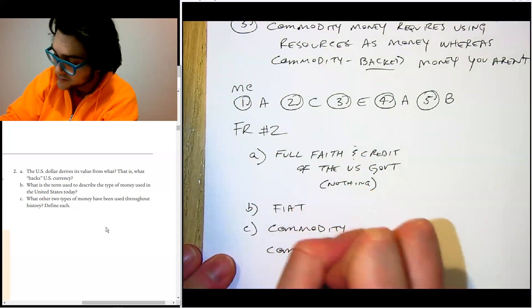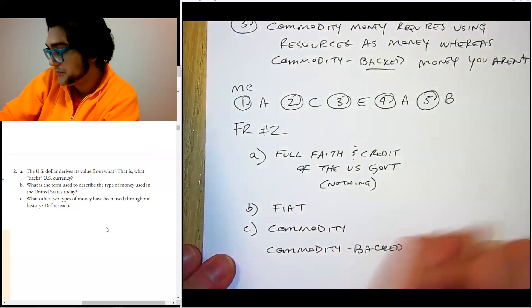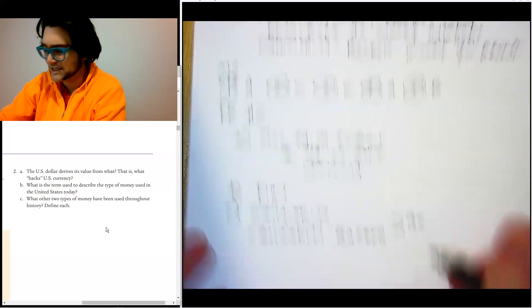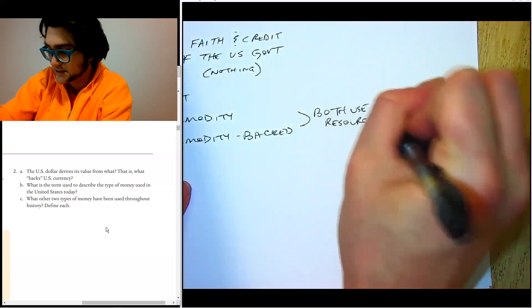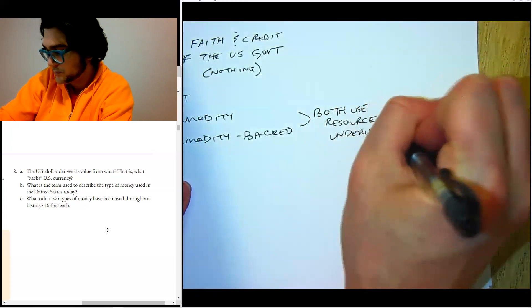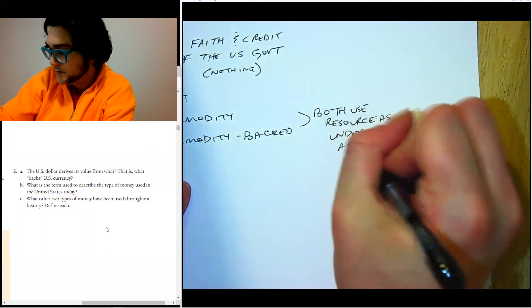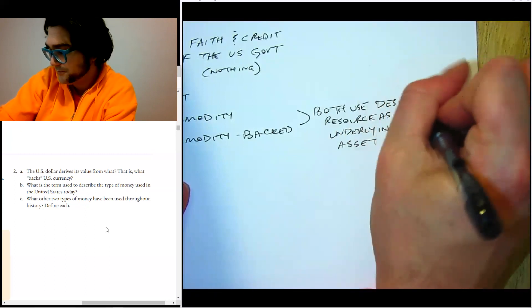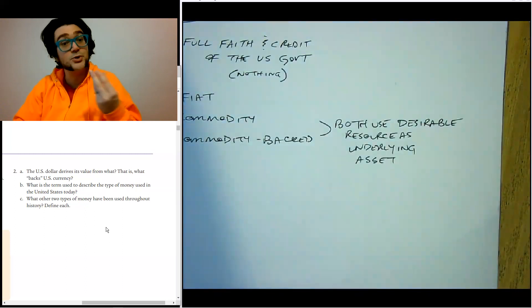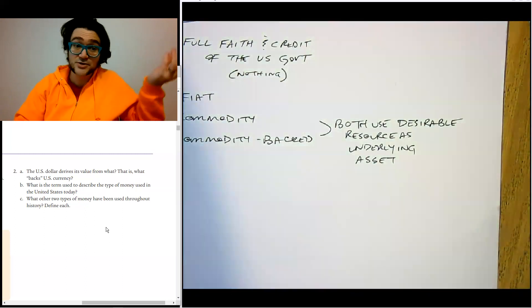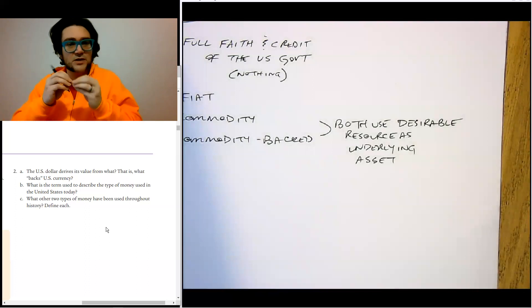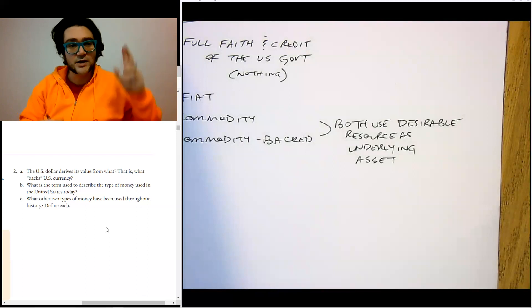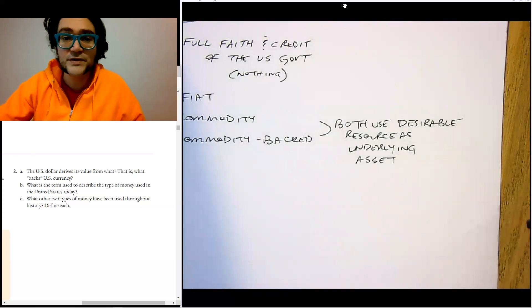What other types of money have been used throughout history? Define each. So the other two types would be commodity and commodity-backed. Define each. They both use a resource as the underlying asset. A desirable resource is the idea here. So you have commodity money, which is actually the physical thing, and then commodity-backed money, which is pieces of paper that represent a certain amount of that valuable thing that's then held by a bank somewhere else. But both of them use some desirable resources, the underlying asset that gives the money value. All right. Hopefully this helped you. I'll see you next time.